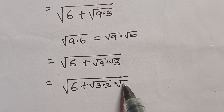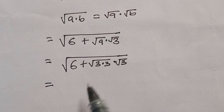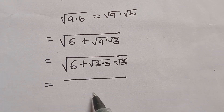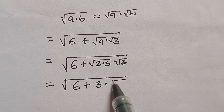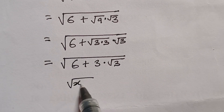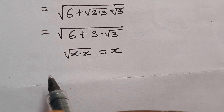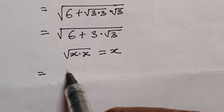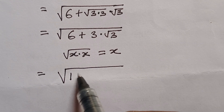I have square root of 6 plus square root of 3 times 3, multiplied by square root of 3. This gives us square root of 6 plus square root of 3 times 3, which simply means 3. So therefore I have square root of 6 plus 3 times square root of 3. And don't forget, if you have square root of x times x, it simply means x — for example, square root of 10 times 10 gives 10.